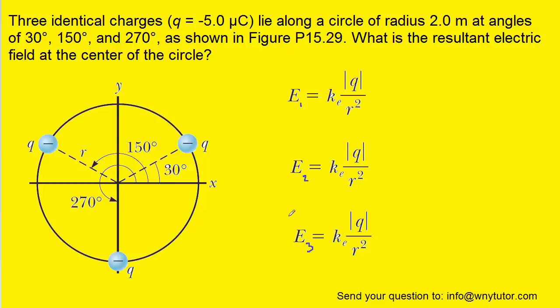But in this case we'll notice that all three charges have the same value, they're all negative five microcoulombs. And in addition they're all the same distance away from the origin, from the center of the circle. Each one is two meters away from that center. So because all the charges are the same and all the distances are the same, we don't have to use subscripts to denote different electric fields. They're all going to have the same magnitude.